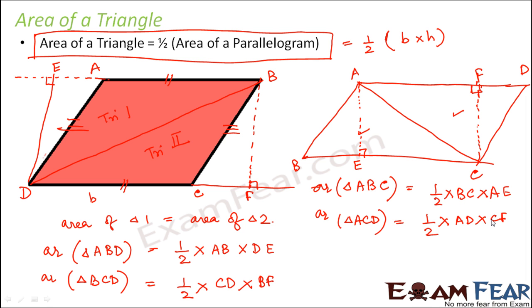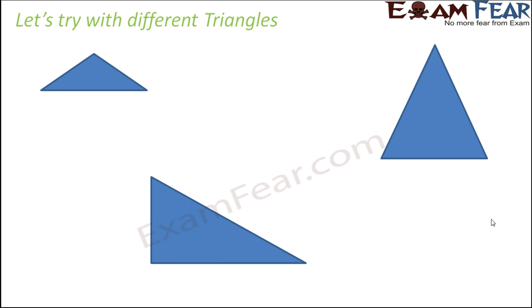You might wonder: does this formula work for all types of triangles — right-angle triangles, scalene triangles, equilateral triangles? Yes, it holds true for any type of triangle. If you take a mirror image of any triangle and place it in front, they always form a parallelogram, because a triangle is always half of a corresponding parallelogram.